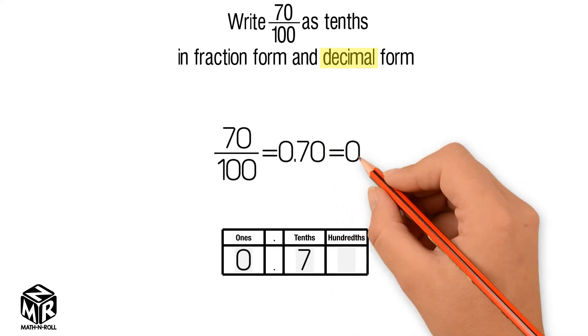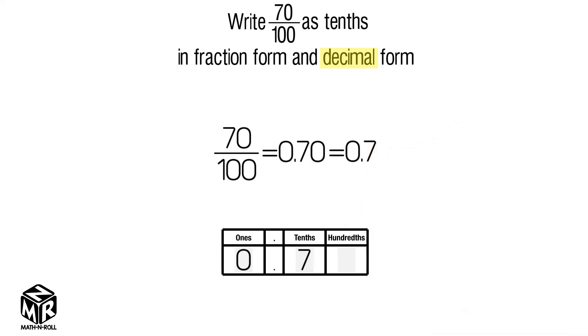We get 0.7, or 7 tenths. 7 tenths is the equivalent decimal to 70 hundredths.